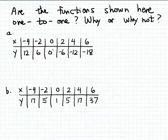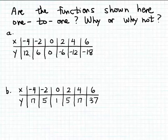If we examine the function here in part a, notice that it must be the case that different inputs, different x values, match different y values, because there are no output values, no y values, repeated in this function. All of the outputs are different numbers, so it cannot be the case that different inputs match the same output. Therefore, the function represented by this table in part a is an example of a one-to-one function.